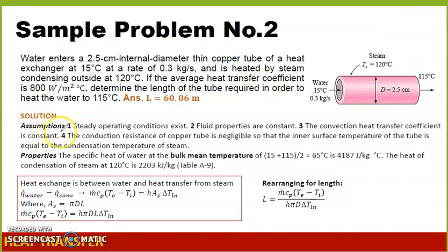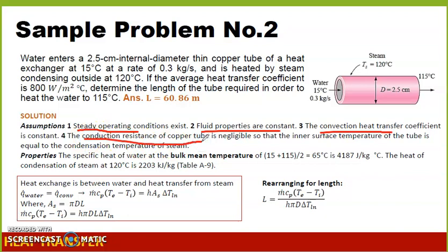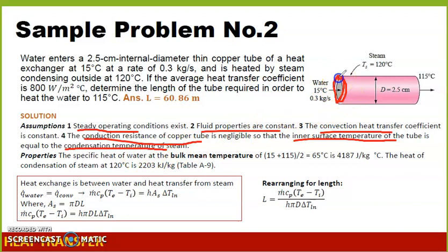These are some of the assumptions. First, steady operating conditions exist. The fluid properties are constant, and the convection heat transfer coefficient is also constant. The conduction resistance of the copper tube is negligible — we assume there is no conduction at the surface, since this pipe is a very thin copper tube, such that the inner surface temperature of the tube equals the condensation temperature of the steam.